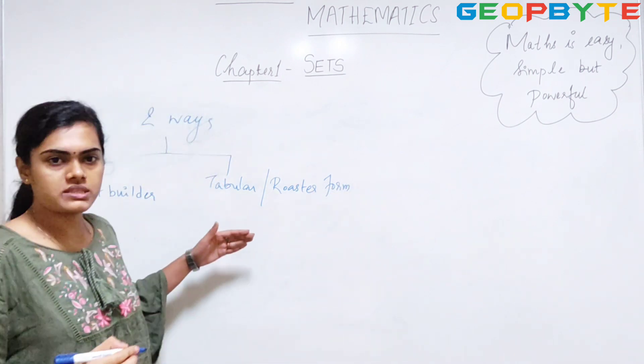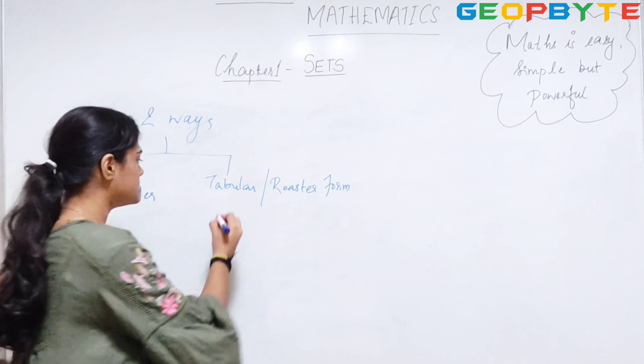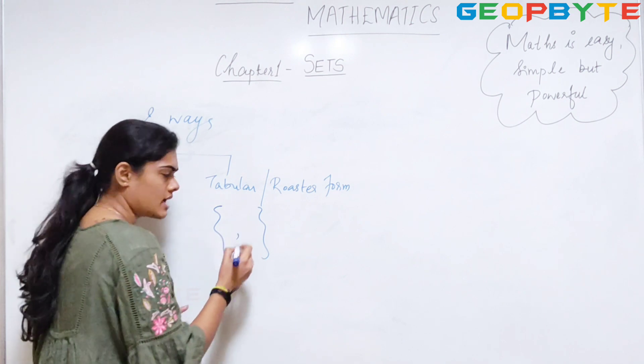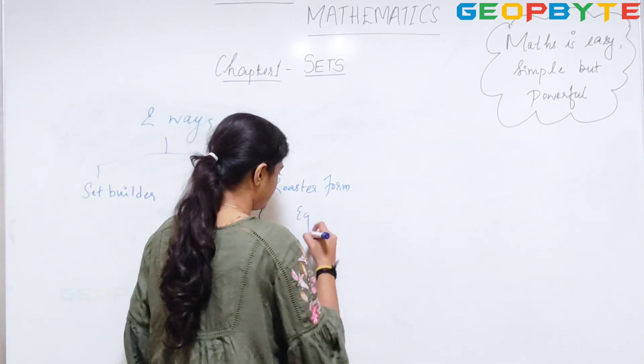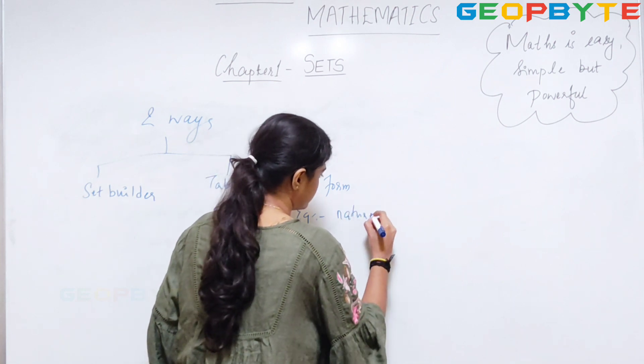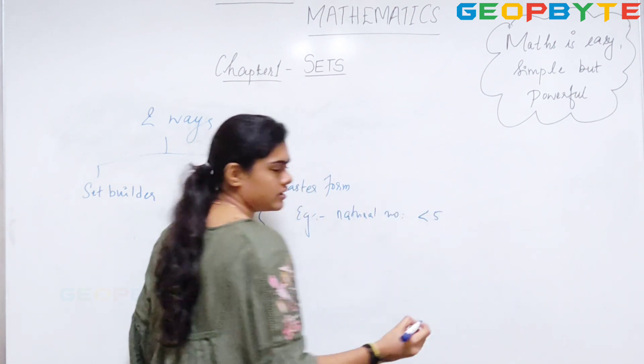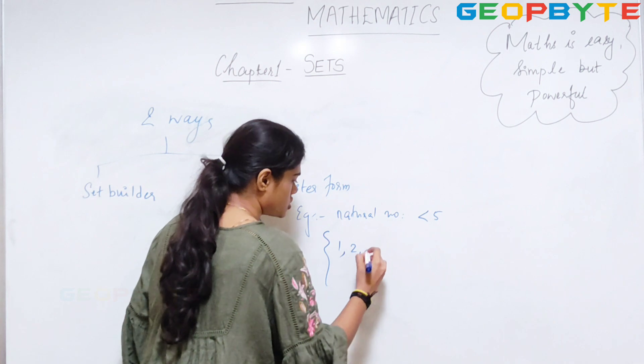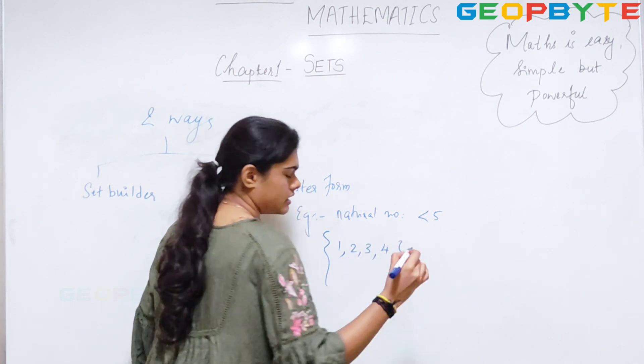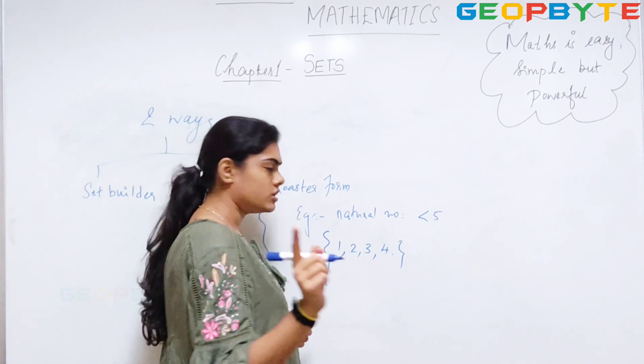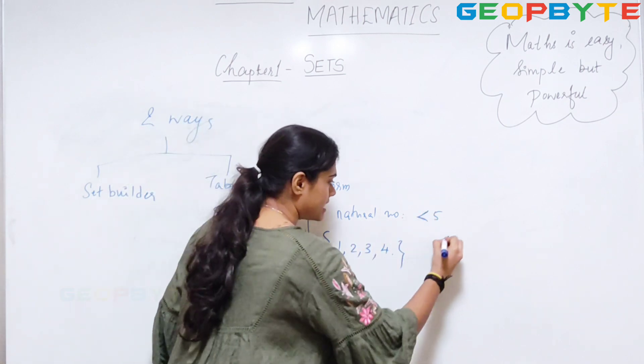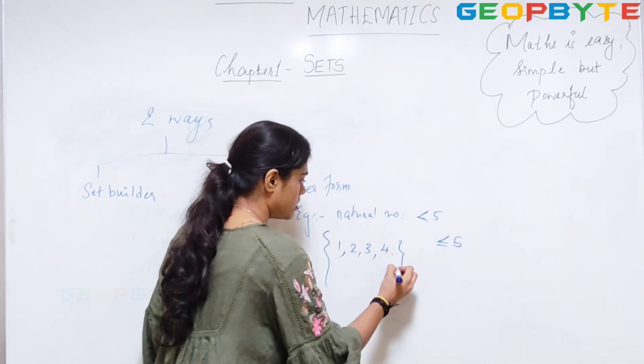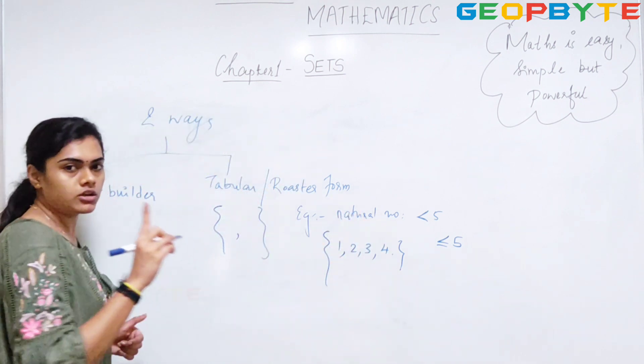How to represent in tabular roster form? These are represented by simple curly brackets. The elements are separated by commas and they are put in curly brackets. For example, natural numbers less than 5, I can write just as curly bracket 1, 2, 3, 4. Should I include 5? No, because it's less than. But if I write less than or equal to 5, then my element should contain 5. This is the representation in tabular or roster form.